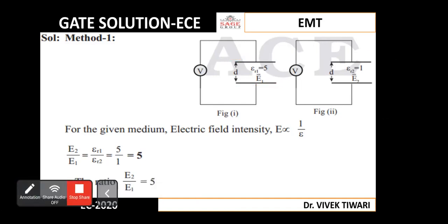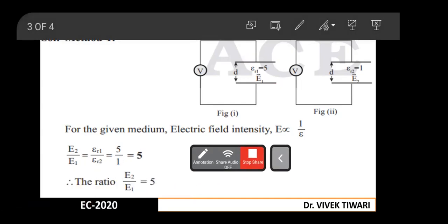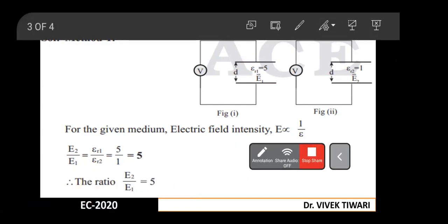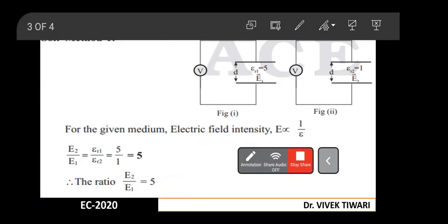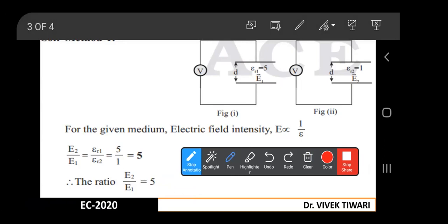We know that electric field is directly proportional to 1 upon epsilon. From this expression, we can write E2 upon E1 equals εr1 by εr2. Here we will put the value of εr1 that is 5 and value of εr2 that is 1.